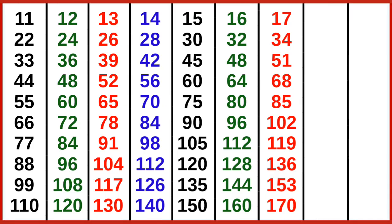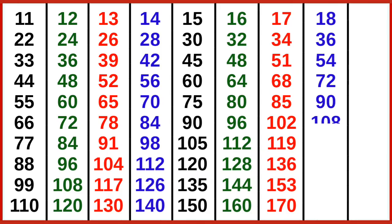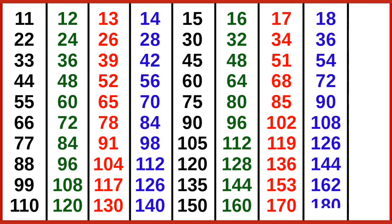18 ones are 18, 18 twos are 36, 18 threes are 54, 18 fours are 72, 18 fives are 90, 18 sixes are 108, 18 sevens are 126, 18 eights are 144, 18 nines are 162, 18 tens are 180.